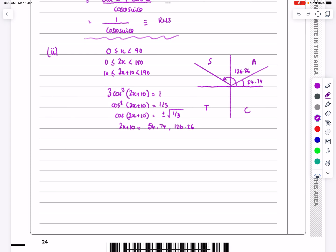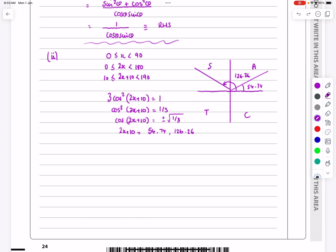So if that's true, we're going to get 2x plus 10 is equal to those, which means that 2x would be 44.74 or 116.26. Sorry, it's 25, apologies there. That's just me not reading off my calculator properly. That should be a 5 there, and that should be a 5 there.